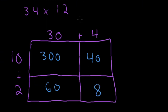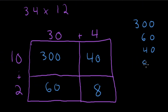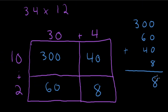Now let's add everything up: 300, 60, 40, and 8. In the ones column: 0 plus 0 plus 0 plus 8 is 8. In the tens column: 6 plus 4 is 10, so we write 0 and regroup. In the hundreds column: 3 plus 1 gives us 4. Our final answer is 408.